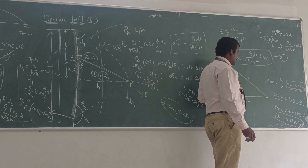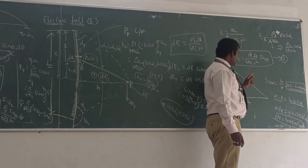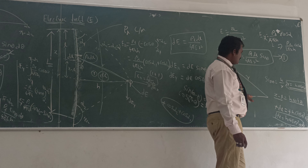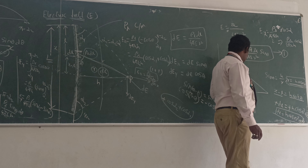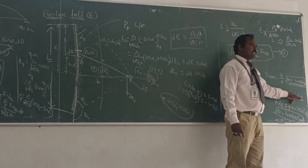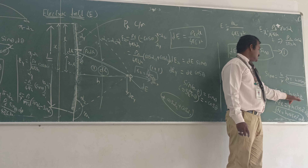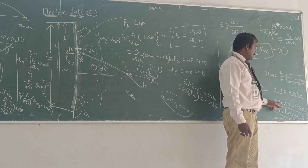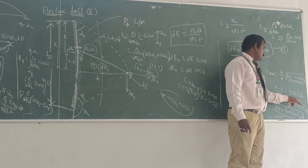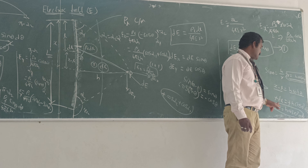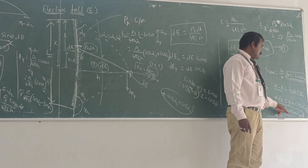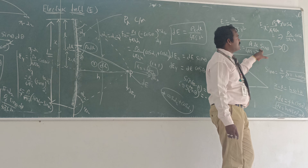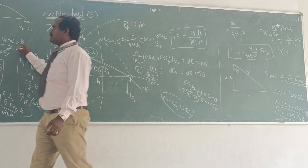From this triangle, we can find dL as well as the R value. We have sin theta equal to H divided by R, so we can find R. Similarly, X minus L equals H times tan theta. Our requirement is dL, so we differentiate: dL equals H times sec squared theta times d theta, i.e., H divided by cos squared theta times d theta.